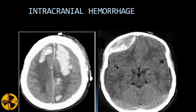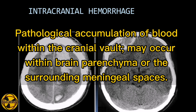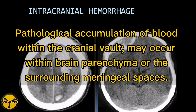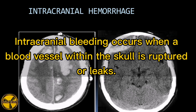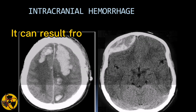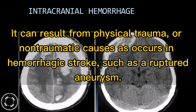An intracranial hemorrhage is the pathological accumulation of blood within the cranial vault. It may occur within the brain parenchyma or the surrounding meningeal spaces. Intracranial bleeding occurs when a blood vessel within the skull is ruptured or leaks. It can result from physical trauma or non-traumatic causes, such as hemorrhagic stroke or a ruptured aneurysm.